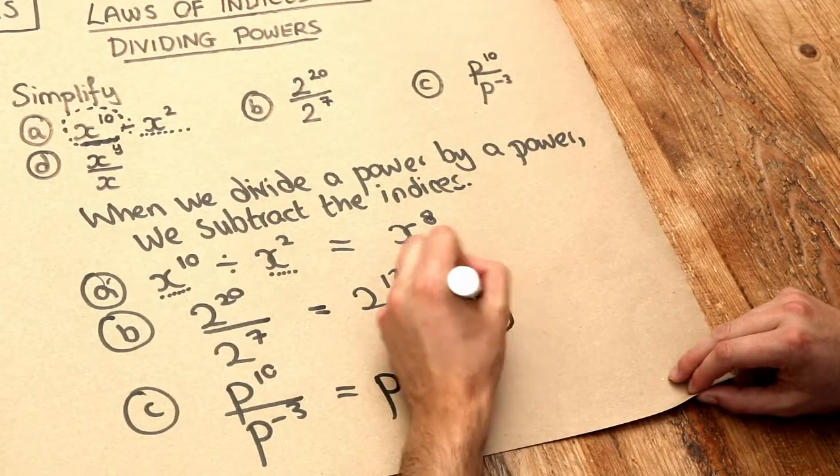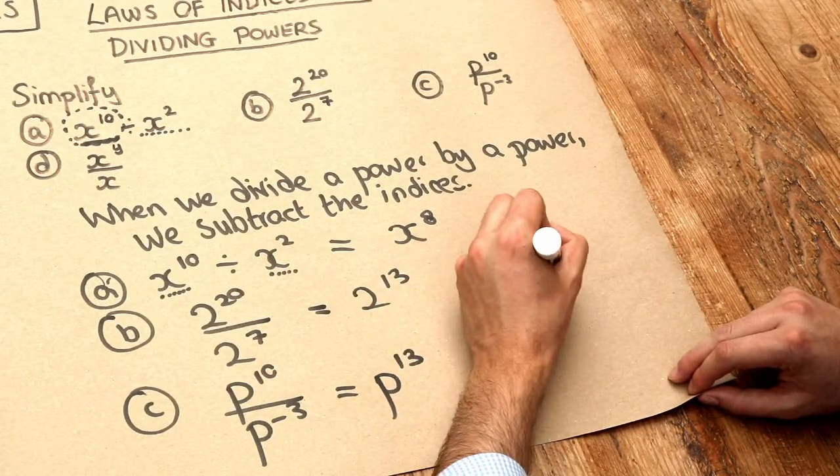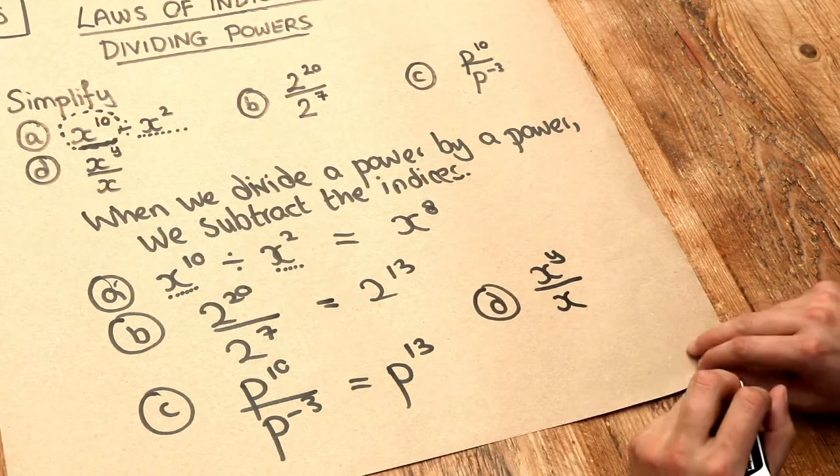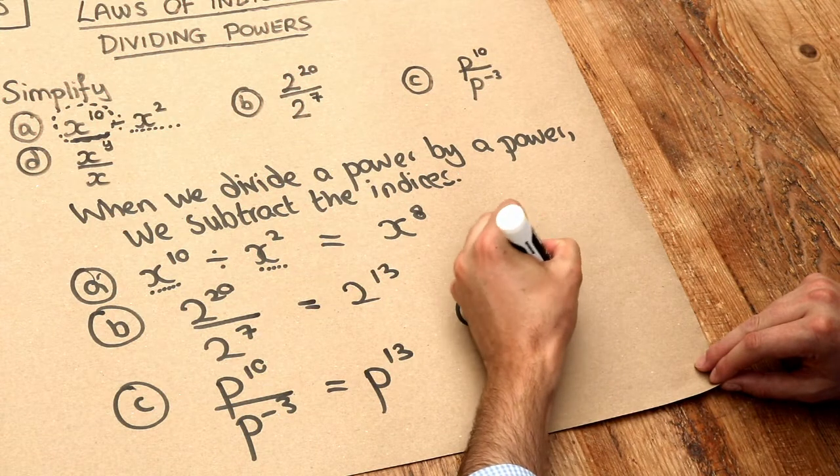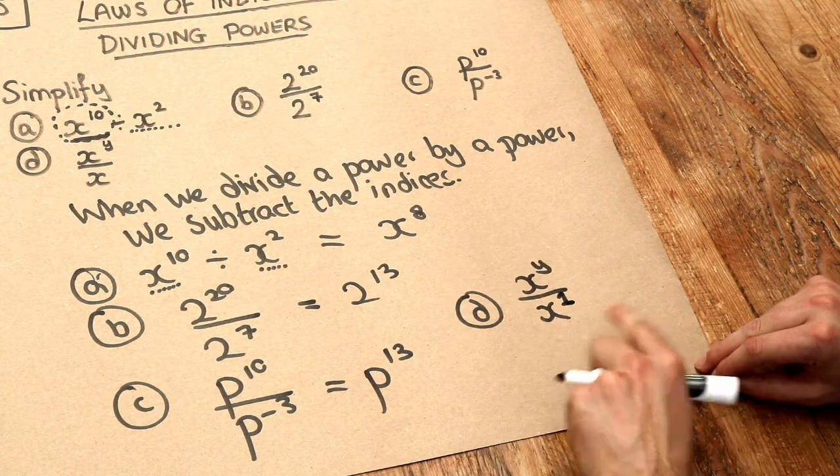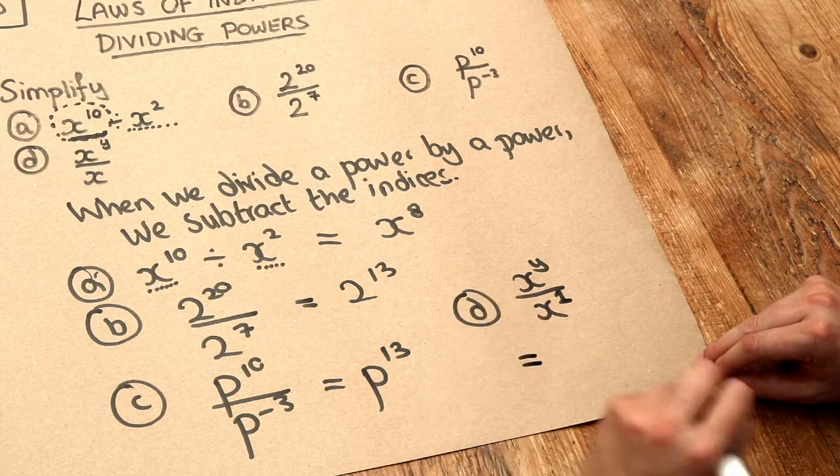Lastly, we've got x to the y divided by x. Notice there's no index on this. We can put an index of 1, because x to the power of 1 is just x. Then we can use our usual rule.